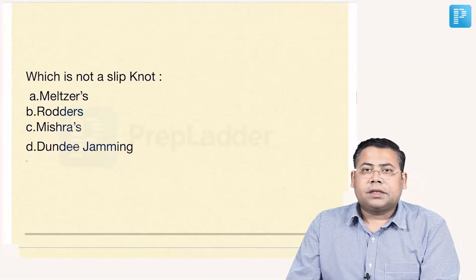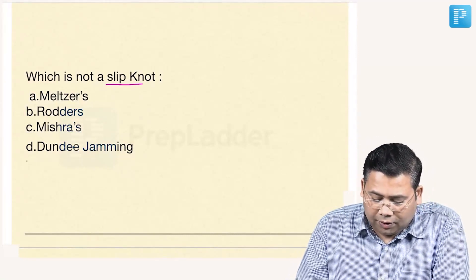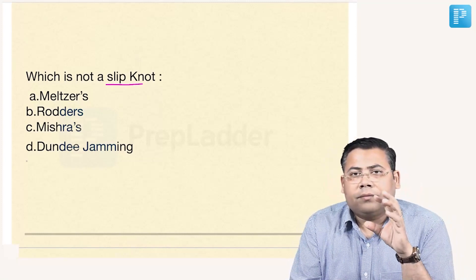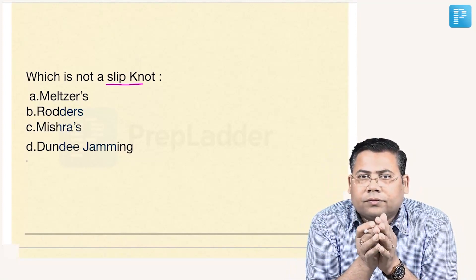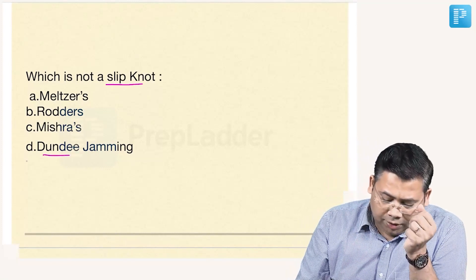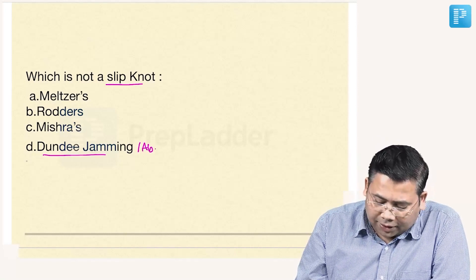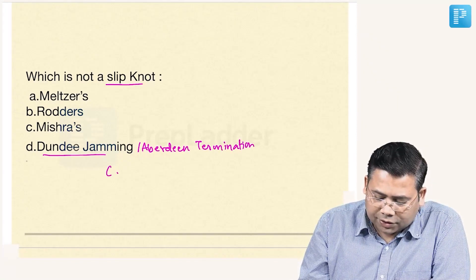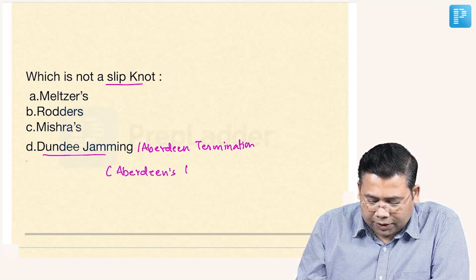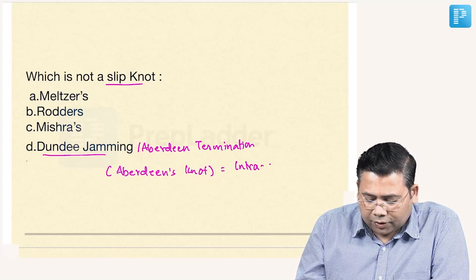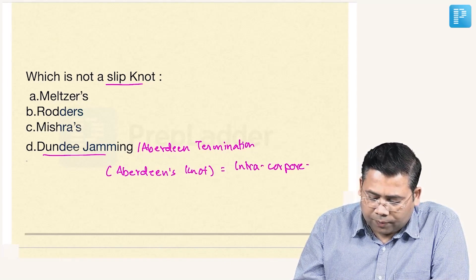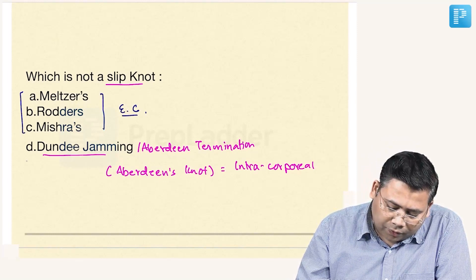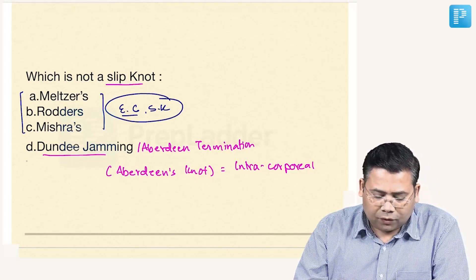Now this is a very important point: the knots mentioned here are basically the extracorporeal versions of laparoscopic slip knots. Dundee jamming and Aberdeen's termination together are popularly known as Aberdeen's knot, which is intracorporeal. Apart from this, these three knots — PSCK — are extracorporeal slip knots.